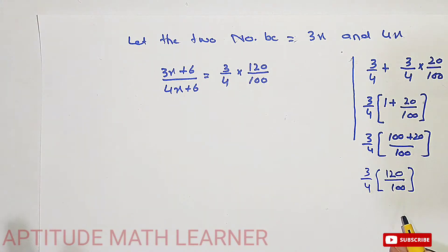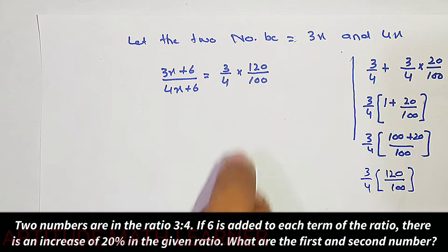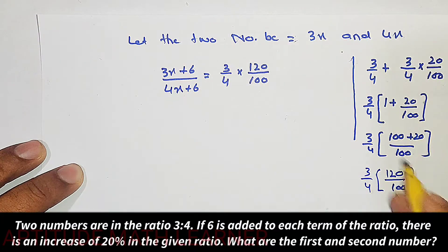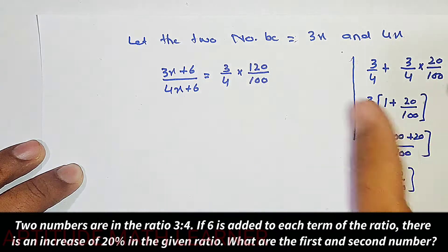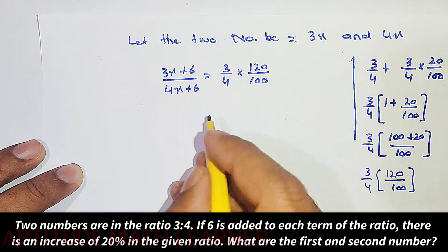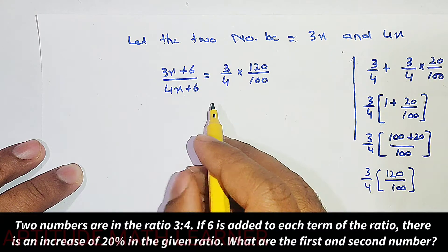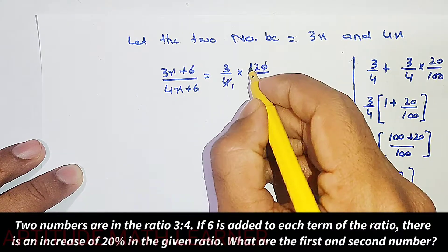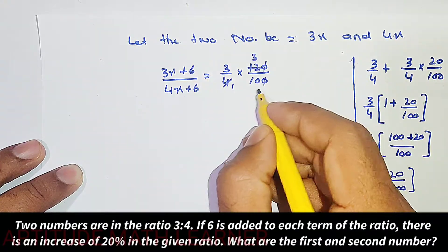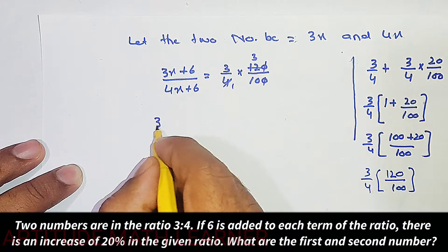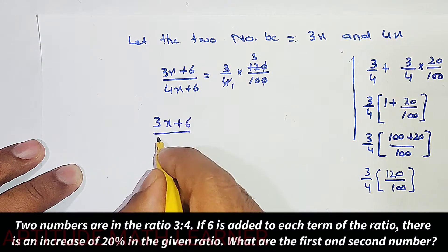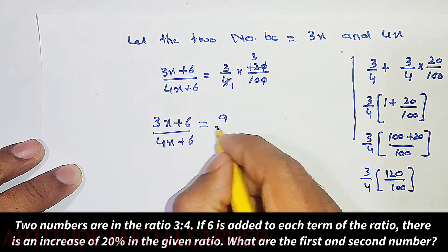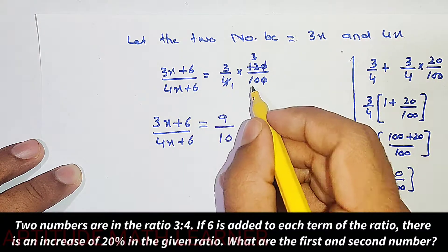As a shortcut, you can directly put 120 and multiply by 3 upon 4. Cancelling the zeros, 4 ones are 4 and 4 threes are 12, so this becomes: 3x plus 6 upon 4x plus 6 is equal to 3 multiplied by 3, giving 9 upon 10.